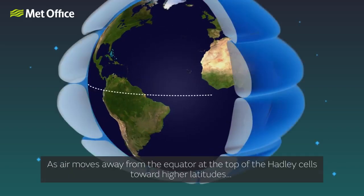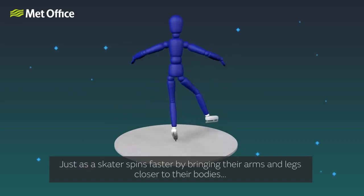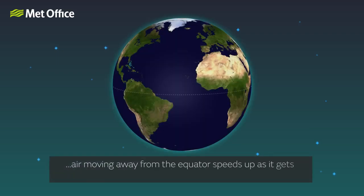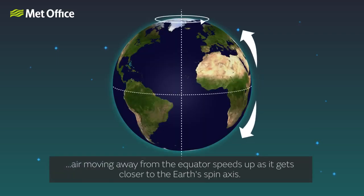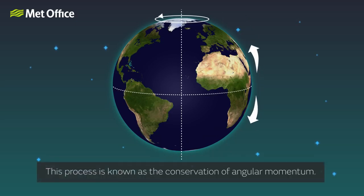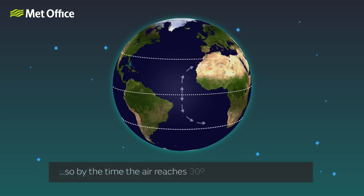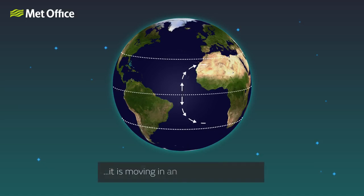As air moves away from the equator at the top of the Hadley cells towards higher latitudes, it starts to be deflected by the Coriolis force. Just as a skater spins faster by bringing their arms and legs closer to their bodies, air moving away from the equator speeds up as it gets closer to the Earth's spin axis. This process is known as the conservation of angular momentum. The magnitude of the Coriolis force increases towards the poles, so by the time the air reaches 30 to 40 degrees north or south, it is moving in an eastward direction.